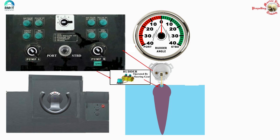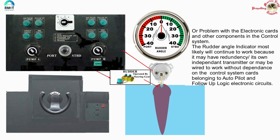When do we use non-follow-up mode? One of the main reasons is when we have a disruption of the signal flow from the rudder angle transmitter to the system. If there is an electrical problem or the rudder angle transmitter is not able to send the feedback signal to the system, then we have no choice but to switch to non-follow-up mode.